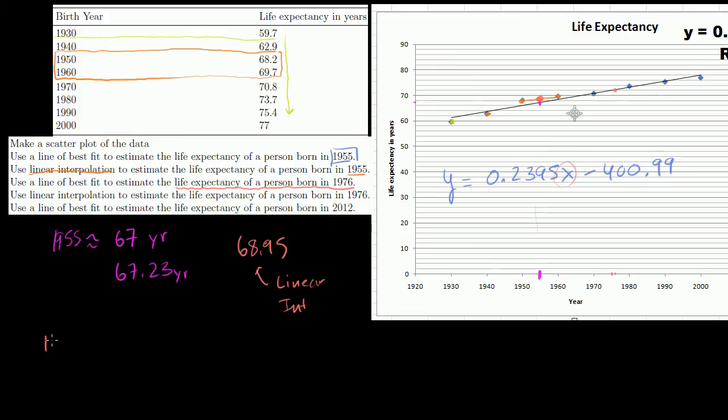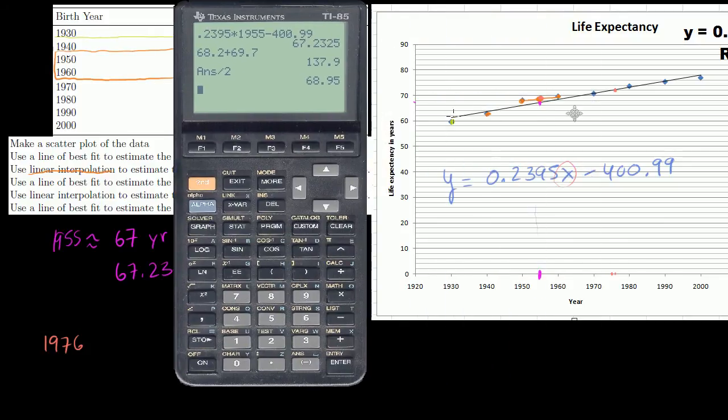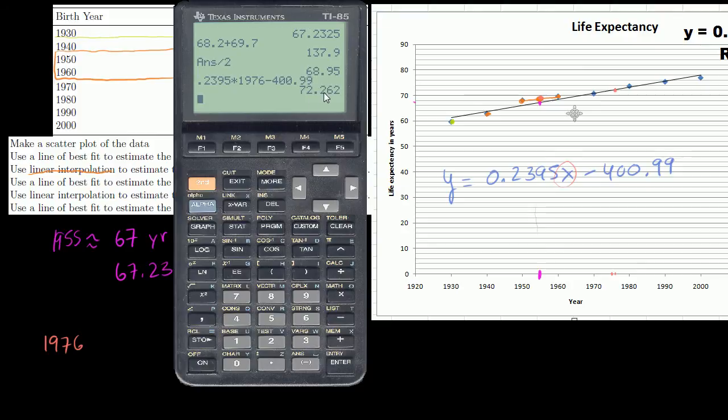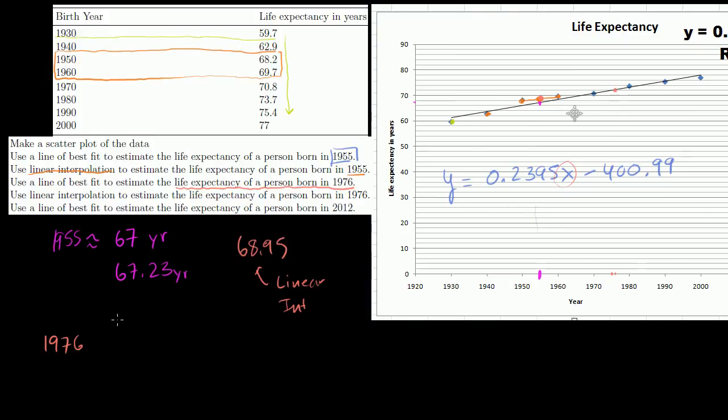So in 1976, the line of best fit is going to give us, if we actually figure out what this line value gives us, 0.2395 times 1976 minus 400.99, so 72.26 years. So it gives us 72.26 years.